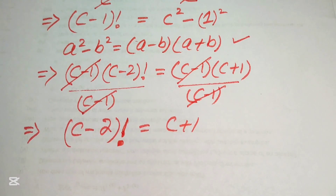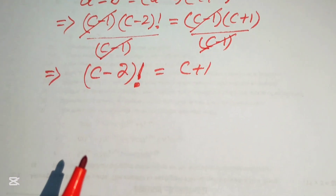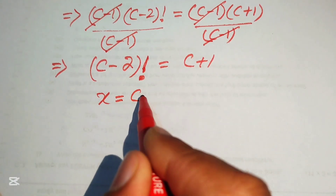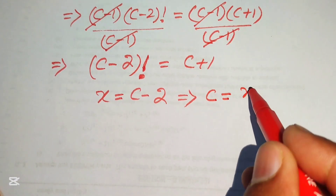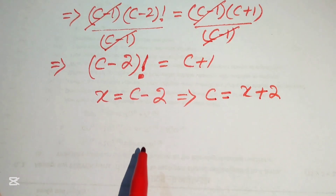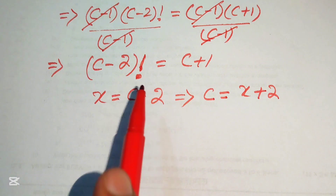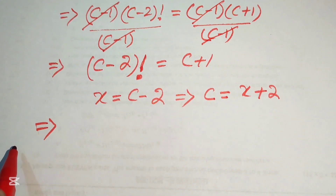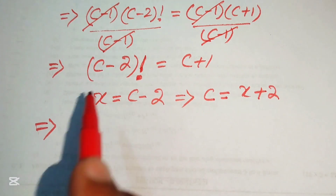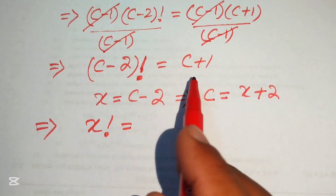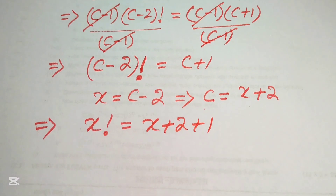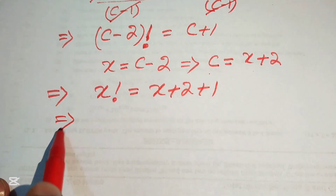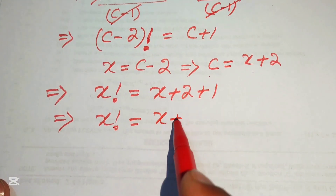For further simplification, we let x equal c minus 2. This gives c equals x plus 2. Substituting into the equation, (c minus 2) factorial becomes x factorial, and c plus 1 becomes x plus 2 plus 1, which simplifies to x plus 3. So we have x factorial equals x plus 3.